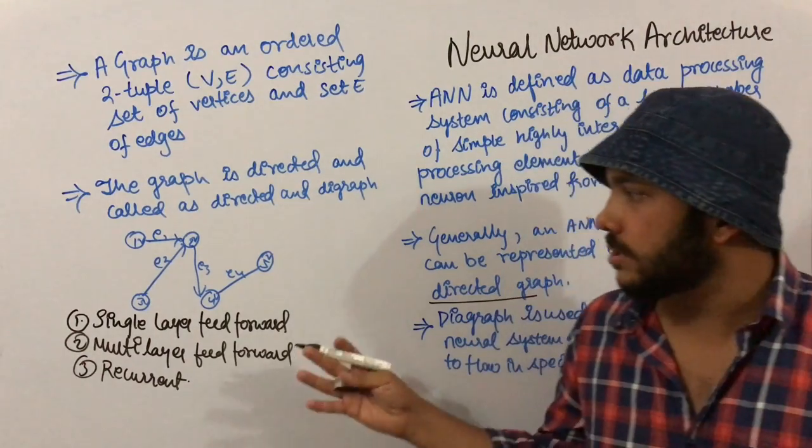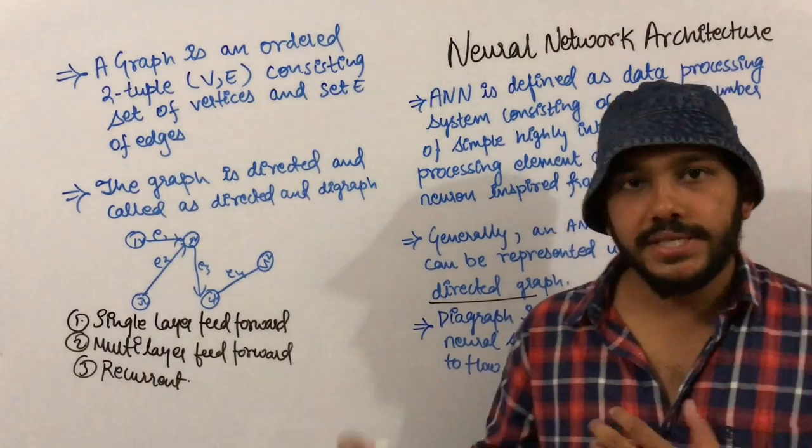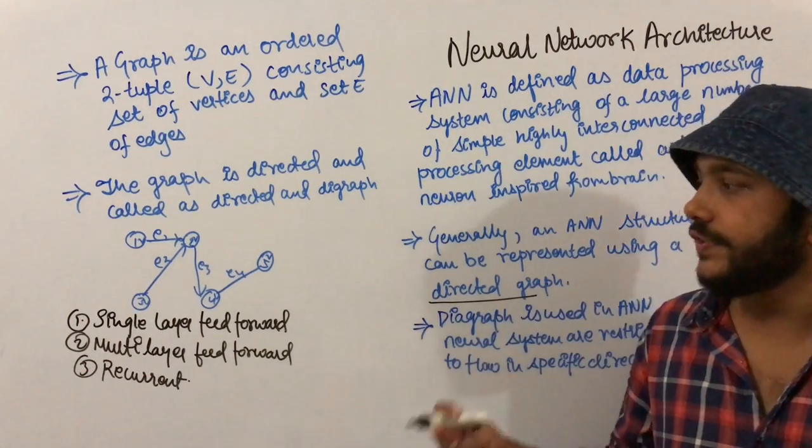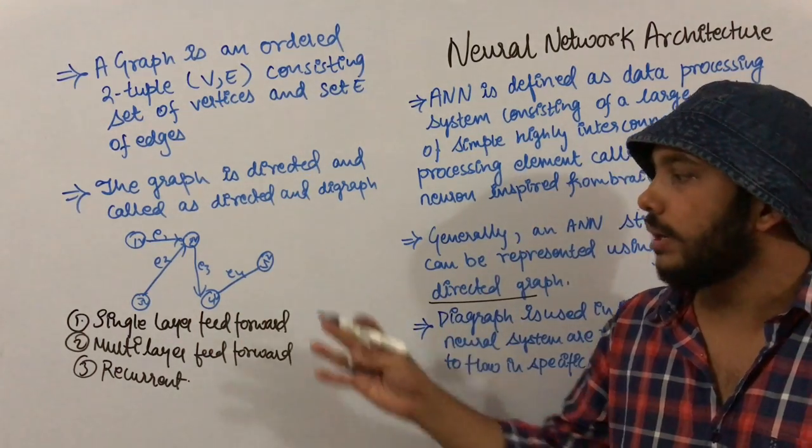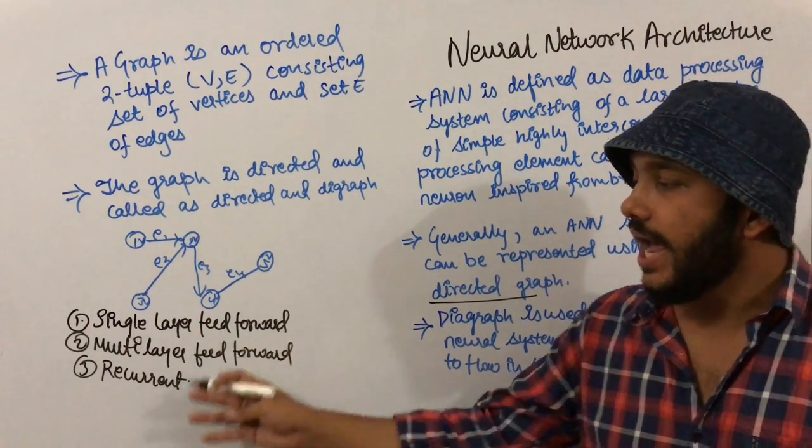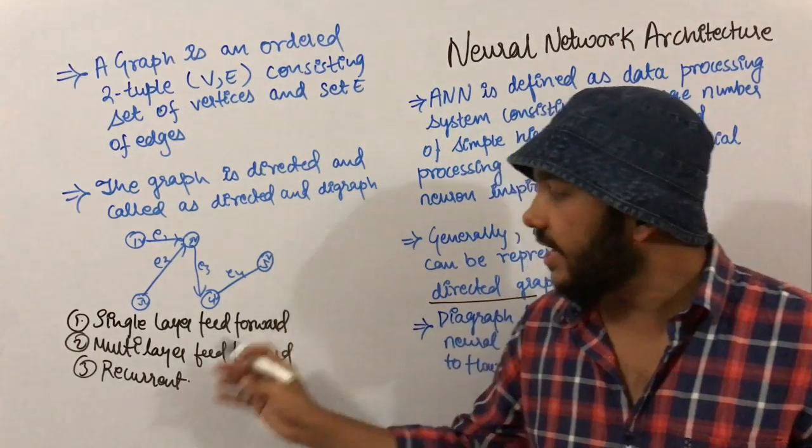Basically, there are three types of networks in artificial neural networks: single layer feed-forward network, multi-layer feed-forward network, and recurrent network.